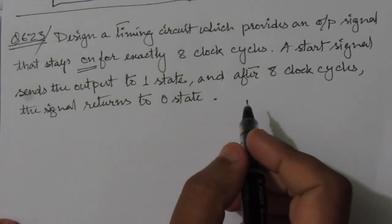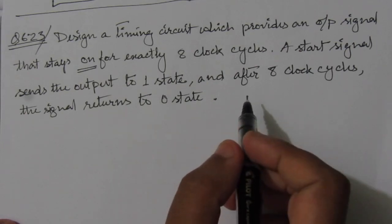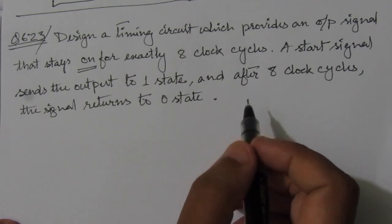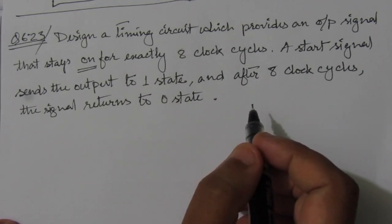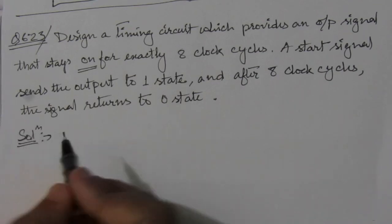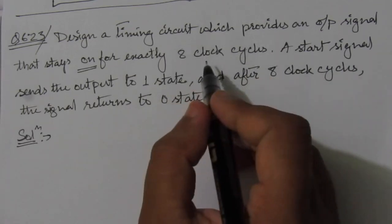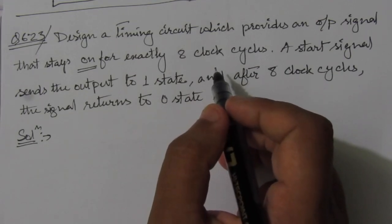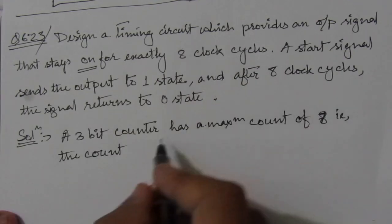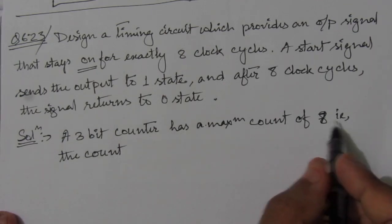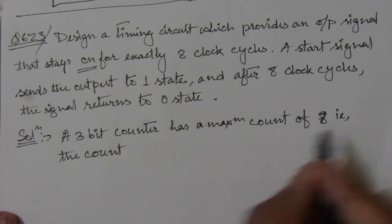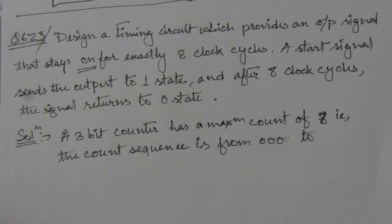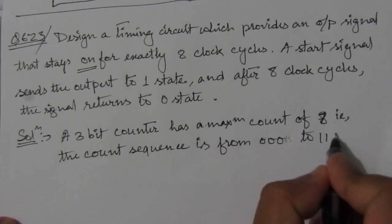We have to keep in mind that we need to wait for 8 clock cycles, then we can reset the output to 0. For designing this circuit and waiting 8 clock cycles, we can use a 3-bit counter. A 3-bit counter has a maximum of 8 counts, with a count sequence from 000 to 111.